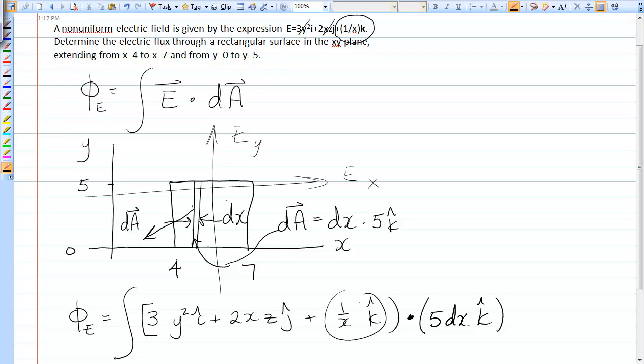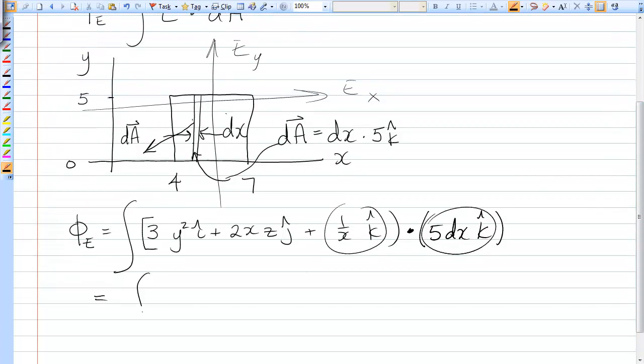And so all you pick up is k-hat dot k-hat. And you end up integrating 5 over x dx.